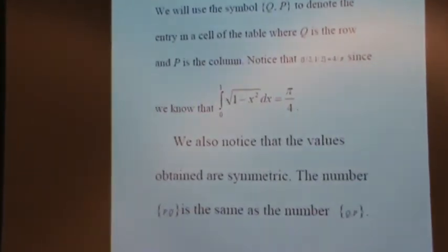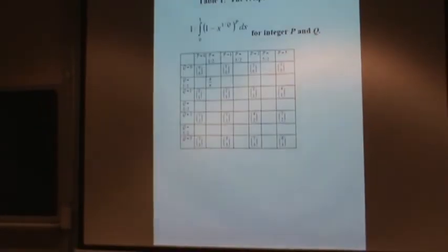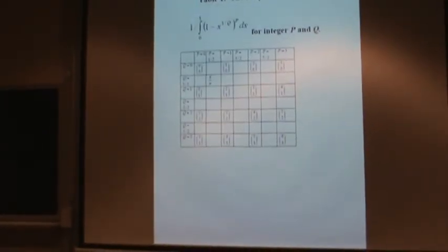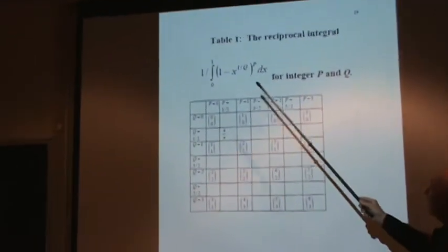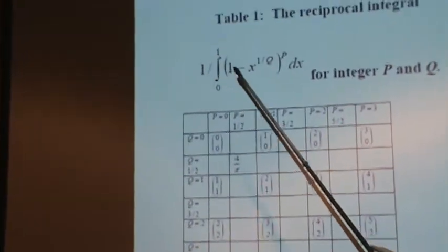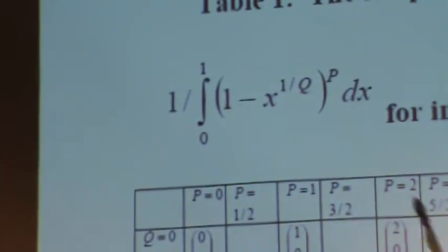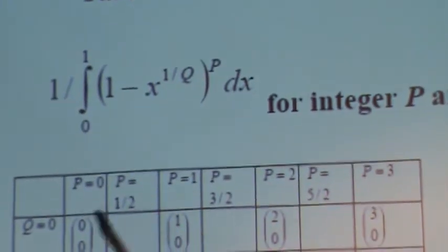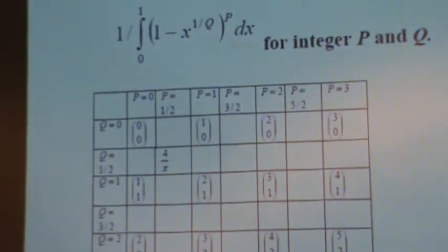Very clear. He's going to build a table. Here's the integral. By the way, he doesn't evaluate the integral. He uses the reciprocal of the integral. And apparently, the reason for doing that is that if he just uses the integral, he gets fractions in some of the blocks. But if he uses the reciprocal, he gets whole numbers. And they're easier to work with. So, he uses the reciprocal.